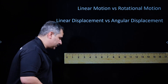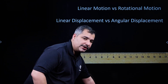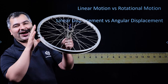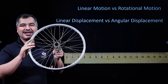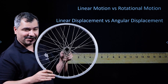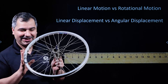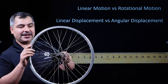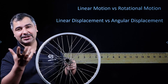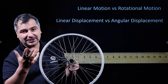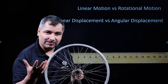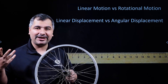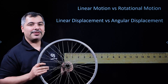Then we will go into rotational motion. In rotational motion, we have to express the displacement. We can express the displacement in rotational motion as the angle of rotation — in terms of angle, in meters.